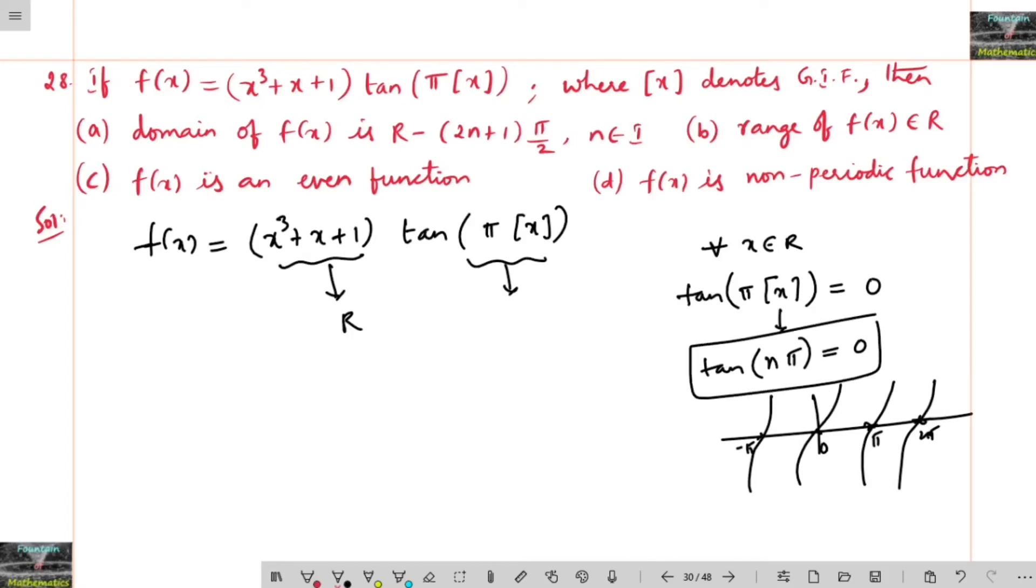And here, this x³ plus x plus 1 can be any real number, it's a cubic polynomial. And hence your f(x) we can say is 0 for all x belongs to R. For every x belongs to R we can say this.